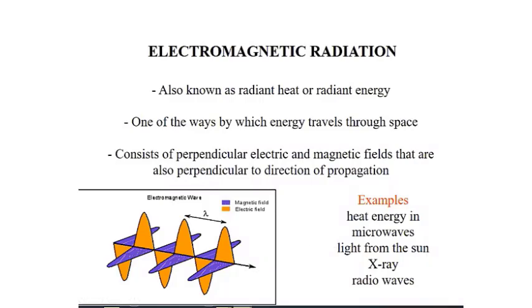Examples of electromagnetic radiation include microwave energy, heat energy coming from microwaves, light coming from the sun, X-rays, and radio waves. These are all examples of electromagnetic radiation.